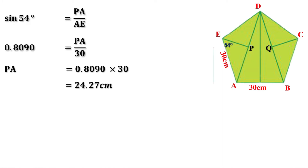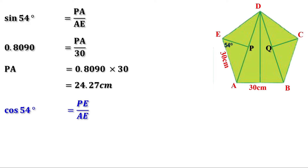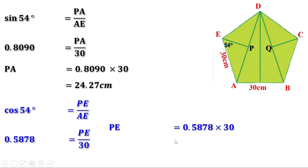The length of the small rectangle is 24.27 centimeters. Now, let us find the breadth of the small rectangle. Based on this angle, it is the adjacent side and this is the hypotenuse. The ratio between adjacent side and hypotenuse is cos. So let us take cos 54. Cos 54 equals PE by AE. The value of cos 54 is 0.5878 and AE is 30. Replacing the values, 0.5878 equals PE by 30. Taking 30 to the other side, PE equals 0.5878 into 30. Multiplying, we get approximately 17.63 centimeters. The breadth of the small rectangle is 17.63 centimeters.